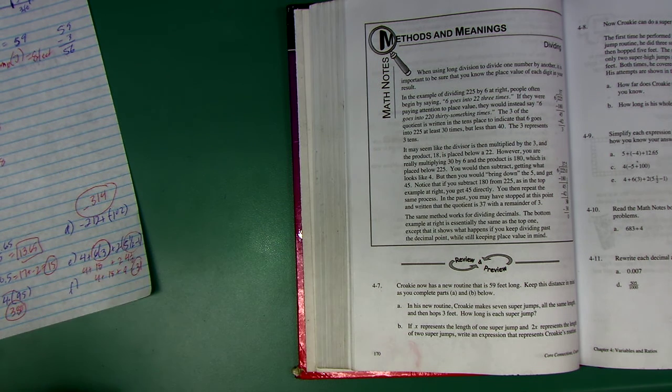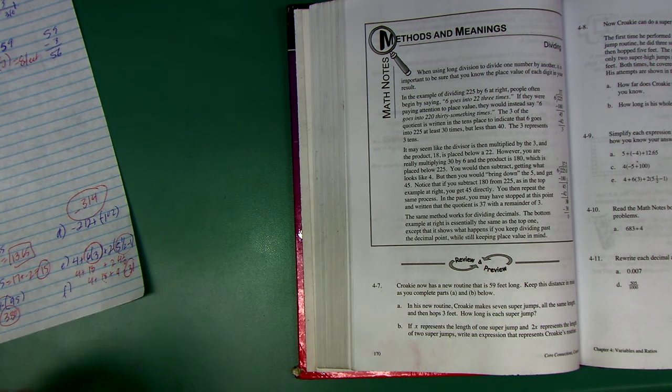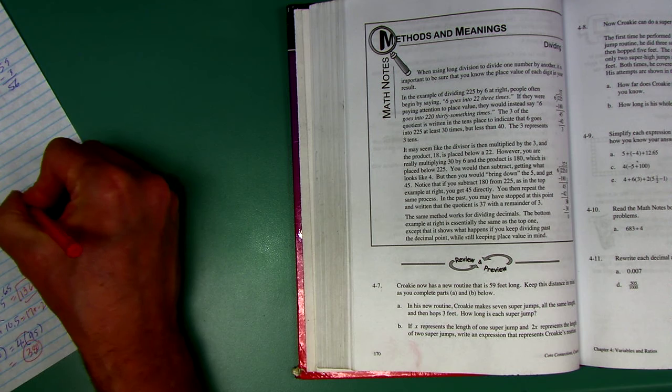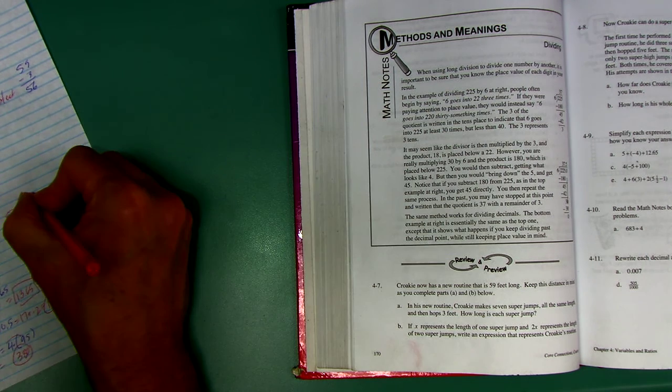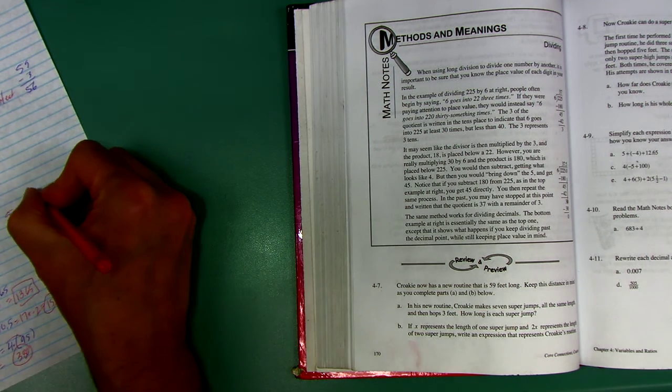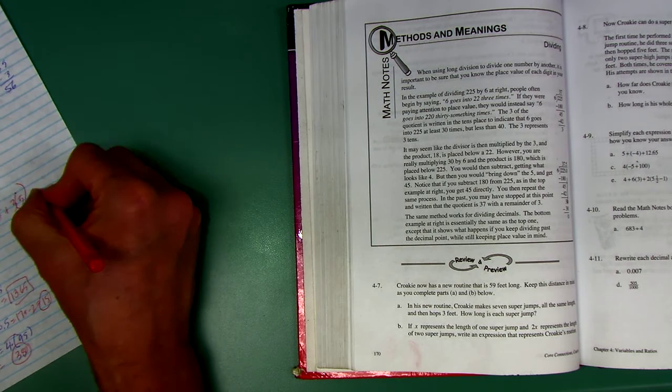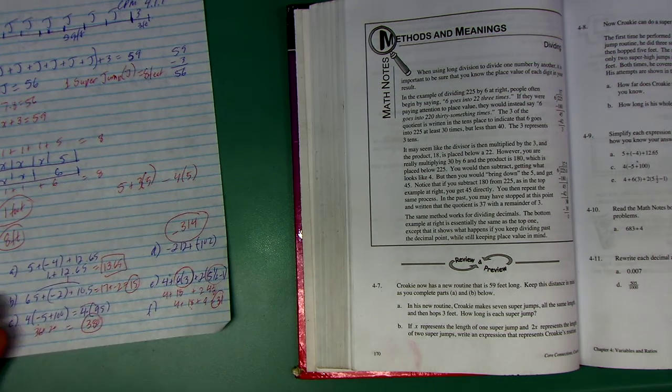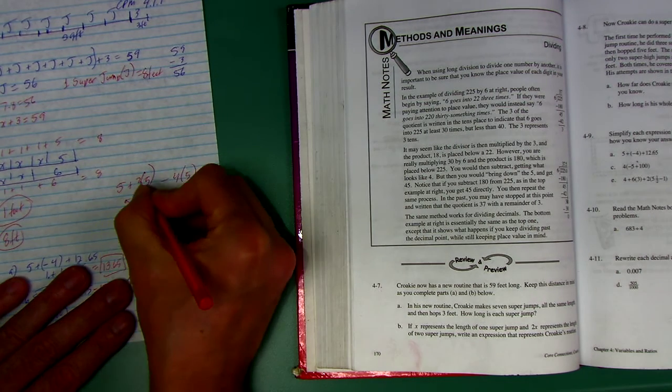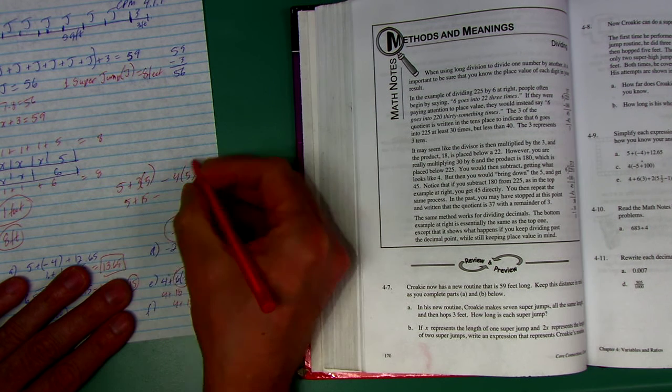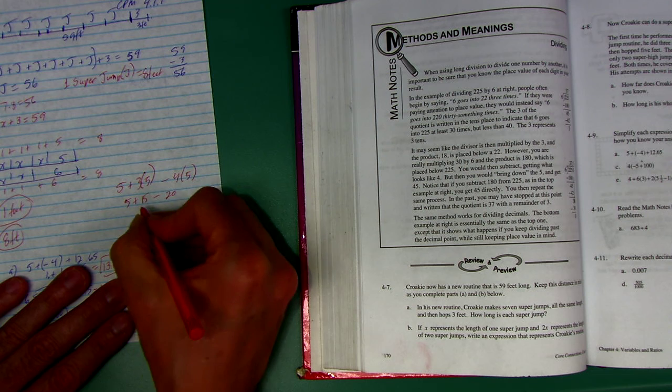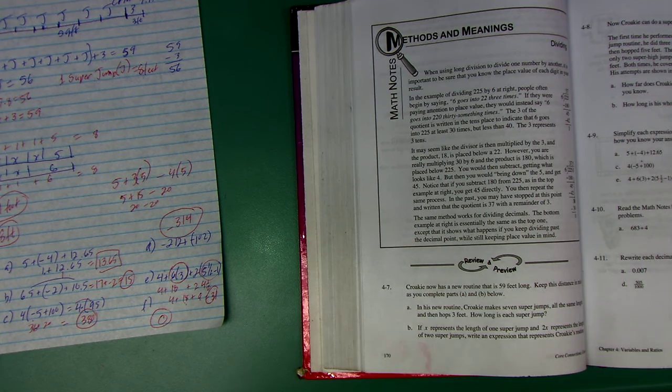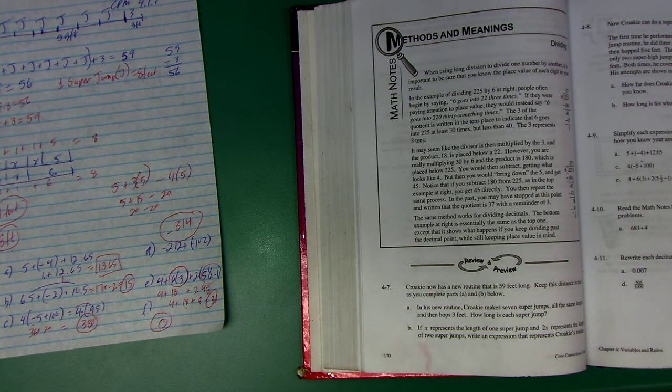All we really have to do is this last one, F, which was 5 plus 3 times 5 minus 4 times 5. Remember, if there's nothing written between the parenthesis and that number, then you're multiplying. So this is 5 plus 3 times 5 is 15, minus 4 times 5 is 20. So 5 plus 15 is 20, 20 minus 20, oh, they did it to us. We got a donut for breakfast, a big fat zero.